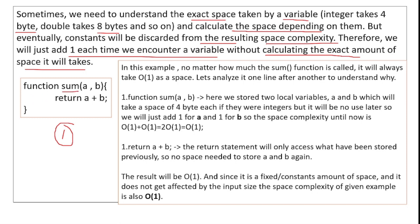Here we have a small code example: a function called 'sum' that takes two variables a and b and returns their sum. In this example, no matter how many times the sum function is called or executed, it will always take O(1) space. So the space complexity is always order of one.